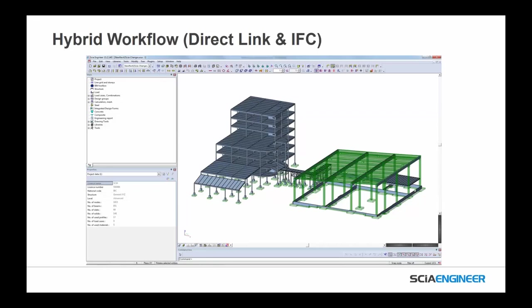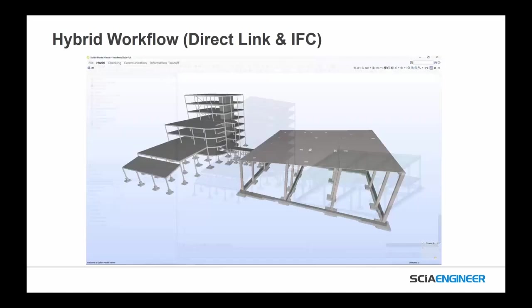The idea is we create a combined model: import the beginning of the model using the direct link, then instead of re-importing the IFC model, we choose to file-update the model, adding the IFC information to the already existing model from the link. Using the BIM Toolbox tools, we can convert geometry like columns with corbels, precast double Ts, or foundation elements directly into native SCIA objects. This gives the engineer flexibility to decide how those objects are represented — not by the link, but by the engineer in the engineering software. For final coordination, we can send this to software like Solibri model checker or Tekla BIM Site for validation.